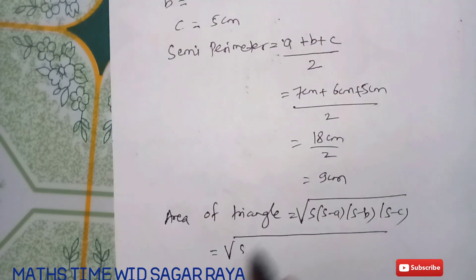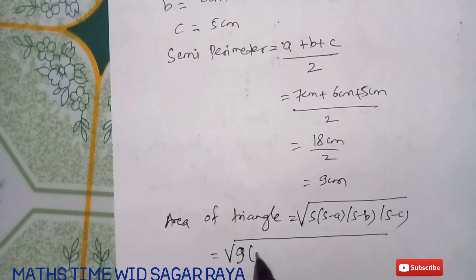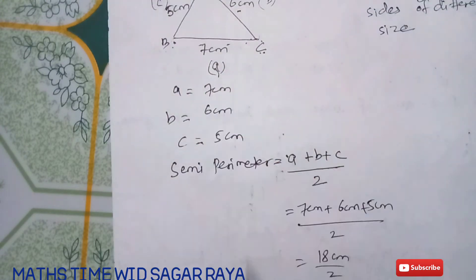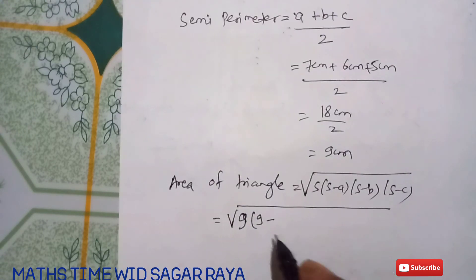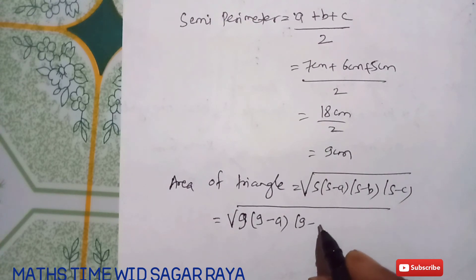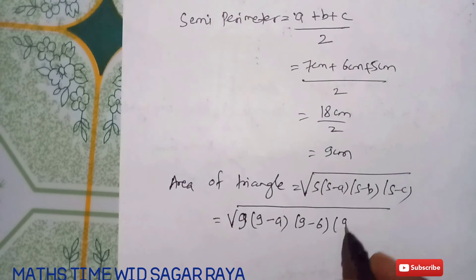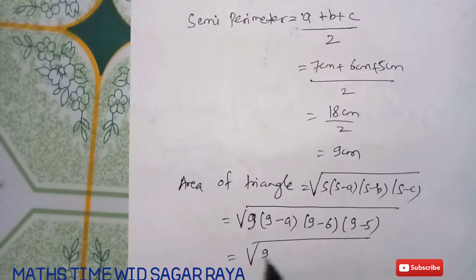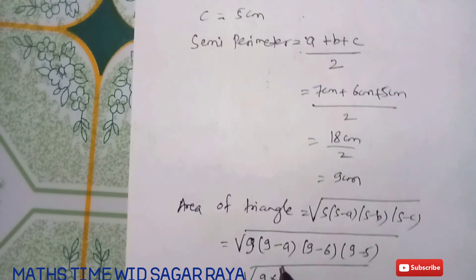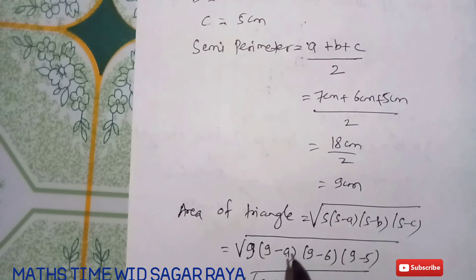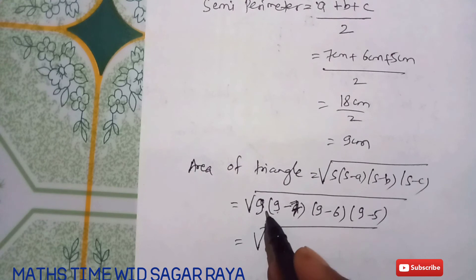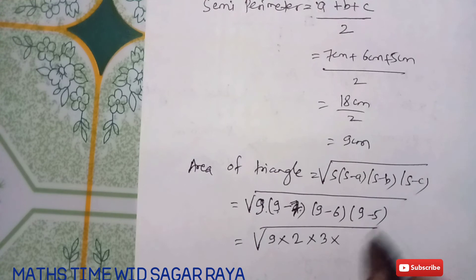Now substituting the values: s = 9 cm, s−a = 9−7 = 2, s−b = 9−6 = 3, s−c = 9−5 = 4. So the expression under the root becomes 9 × 2 × 3 × 4.